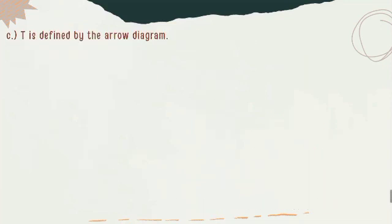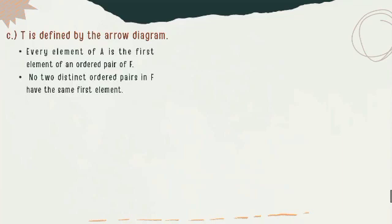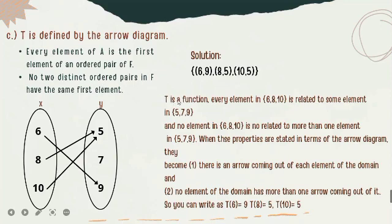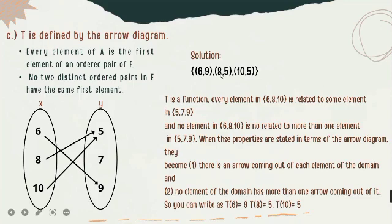Now let's proceed to the last question, which is letter C. T is defined by the arrow diagram. We have the ordered pairs (6,9), (8,5), and (10,5). T is a function. Property 1 says every element of A is the first element of an ordered pair of F. As we can see, the elements of A are 6, 8, 10, and in the ordered pairs we also have first elements 6, 8, 10 — so property 1 is satisfied.